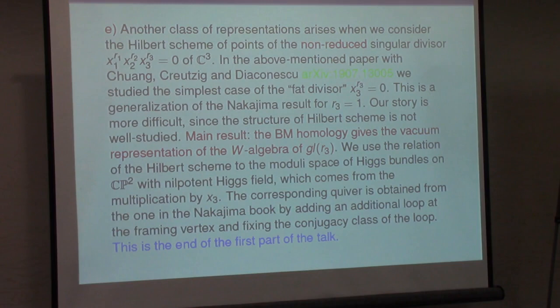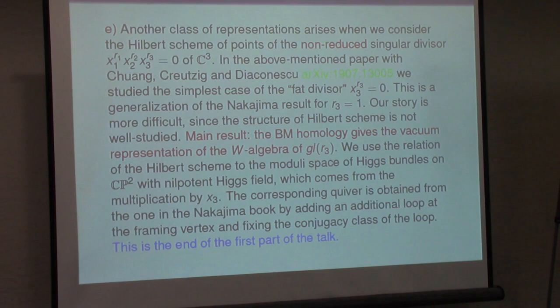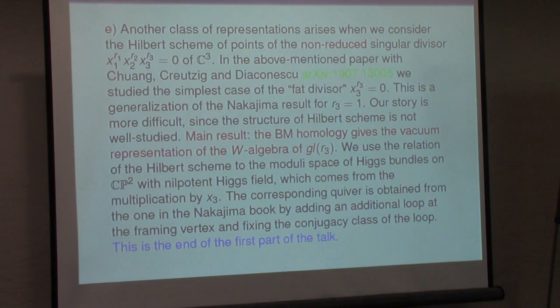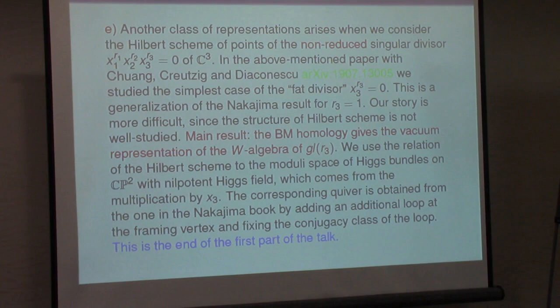The last slide for the first part concerns a more geometric perspective. Instead of using quiver varieties, we can try to generalize the geometric side: considering the Hilbert scheme of points on a non-reduced divisor given by just one equation — three coordinate planes with different multiplicities. An audience member asks about the stability condition for torsion sheaves restricted to each hyperplane, and the speaker confirms that while additional stability conditions exist, the Hilbert scheme itself is already very wild because the divisor is non-reduced and geometrically complicated. One can still describe some stable locus, which is how the proof proceeds.